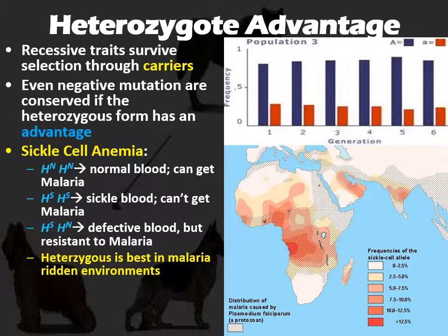So if you're in an area where malaria is very common — such as parts of the Middle East, India, Africa, and Asia — it's actually an advantage to be a heterozygote rather than either homozygous form. Because malaria is so common, your best combination is to have somewhat normal blood — still fairly physically okay — but be resistant to malaria, rather than be sickle cell or fully normal. That's all the stuff we're going to be covering on these notes. If you have any questions about anything, let me know.